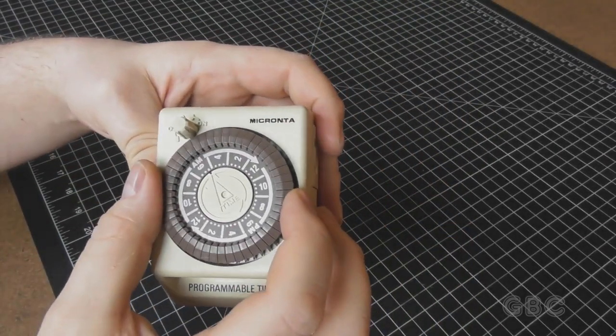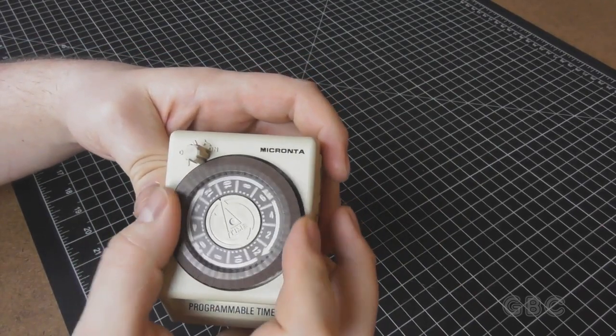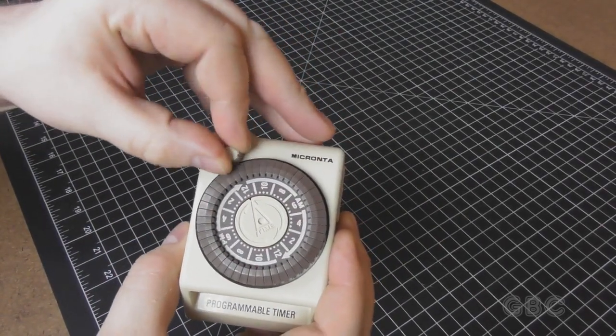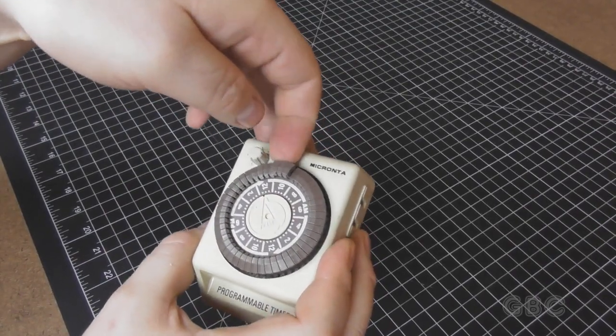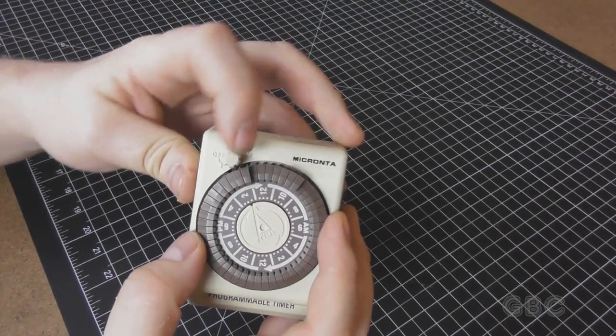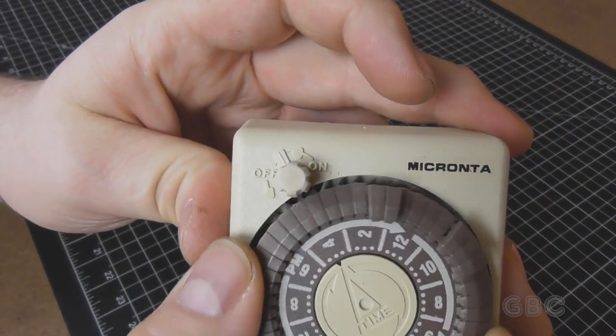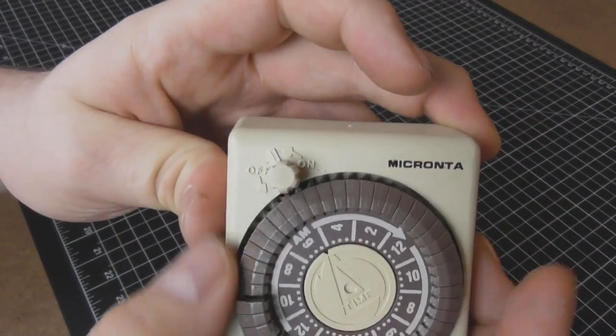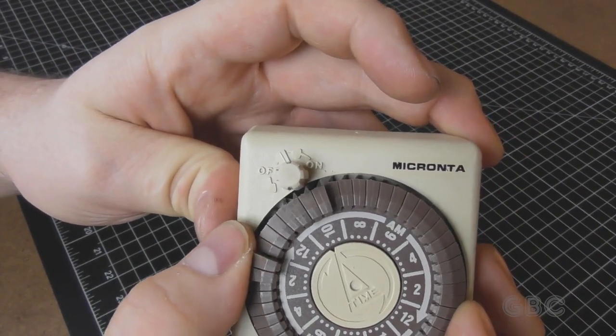Operation is pretty straightforward. You have the clock wheel here where you set your current time and there's a switch there that turns it on and off. These little tabs you pull up or push down depending on whether you want it to turn on or off, and when the clock comes around it'll rotate the switch.